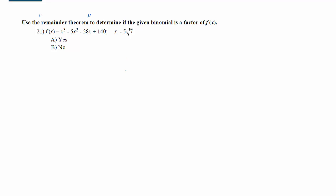Hi, I'm Ms. Hearn. Let's get started. In this video, we're going to talk about how to use the remainder theorem to determine if a given binomial is a factor of a polynomial function. In this case, f(x) equals x³ minus 5x² minus 28x plus 140, and the binomial that we're looking at is x minus 5 times the square root of 7. This problem looks kind of intimidating. Let's talk about one that's a little easier to follow, and then we'll come back to the more complicated problem.